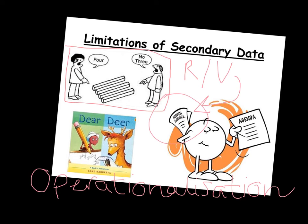Operationalisation of key terms means that one person may define a word differently than somebody else. When a sociologist is doing research, they define and operationalise their key terms. However, if you're using secondary data, the first person may have operationalised a key term differently. A good example is binge drinking: in everyday terms, binge drinking might mean going out and getting very drunk over a weekend, but a doctor would say that someone who drinks more than three units of alcohol in one night is a binge drinker — that's just a couple of small bottles of beer or small glasses of wine. This difference in operationalisation would then affect the validity and reliability of the data.